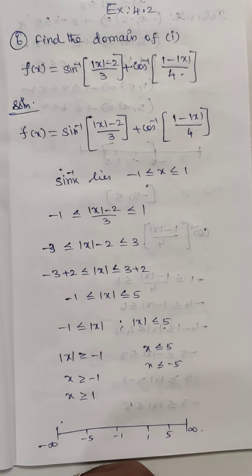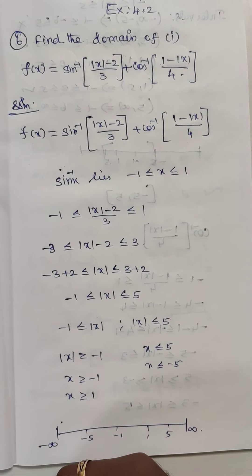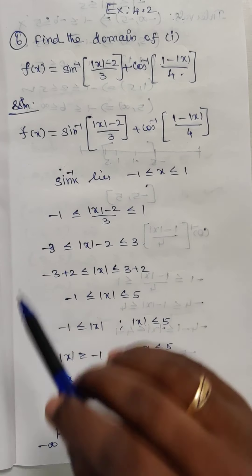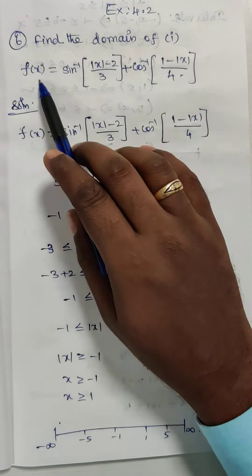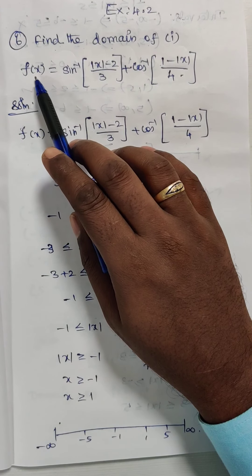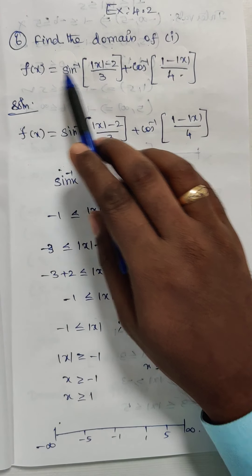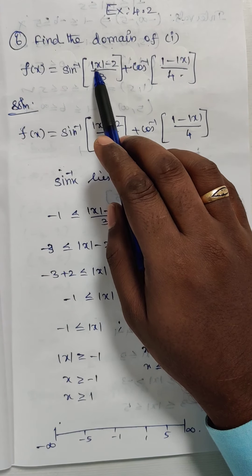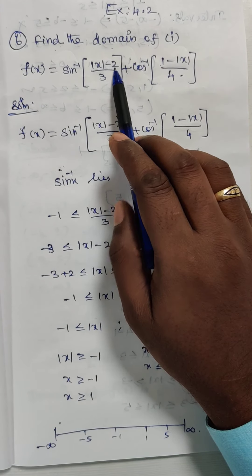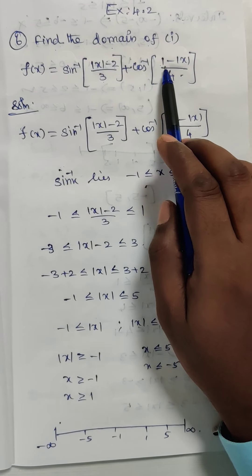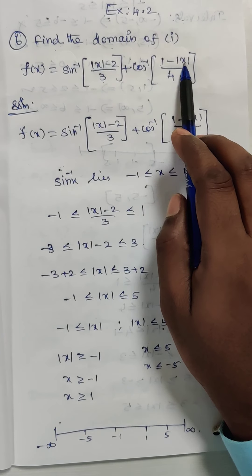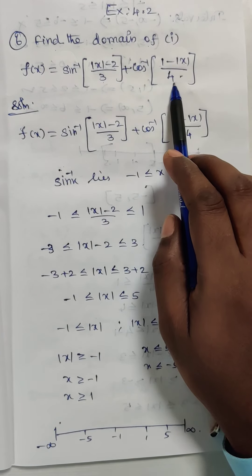Hello students, this is Dinis here. Today we are going to discuss exercise 4.2, question number 6. Find the domain of f of x, which is equal to sin inverse of mod of x minus 2 divided by 3, plus cos inverse of 1 minus mod of x divided by 4.